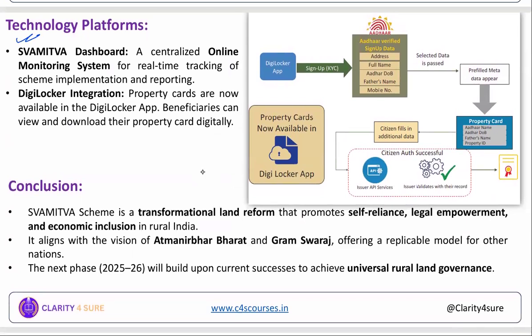The technological platform is a centralized online portal entry system where you can access your property card through the DigiLocker system. Open DigiLocker, sign up with KYC norms through Aadhaar — your details will be displayed. Then citizens fill in additional data like mobile OTP in order to download the property card.